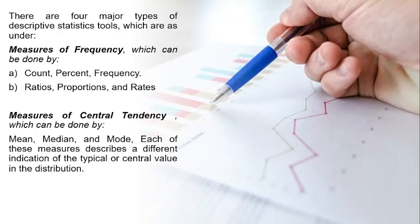Number one is measures of frequency. As its name shows, it helps us to know how frequently anything is occurring, and it can be done by count, percent, or frequency. It can also be done by ratios, proportions, and rates.